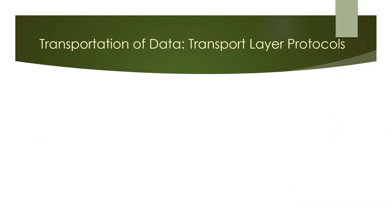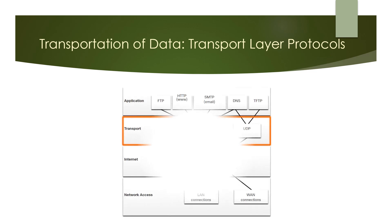As for the transport layer protocol, IP is concerned only with the structure, addressing, and routing of packets. IP does not specify how the delivery or transportation of the packets takes place. Transport layer protocols specify how to transfer messages between hosts and are responsible for managing reliable requirements of conversations. The transport layer includes TCP and UDP protocols, and different applications have different transport reliability requirements. TCP/IP provides two transport layer protocols as shown in this figure.